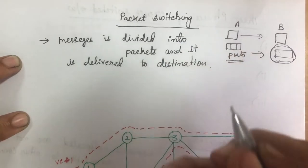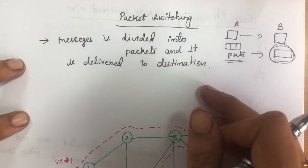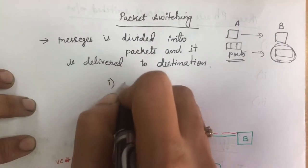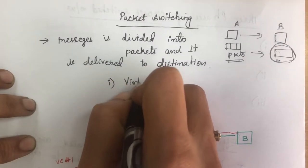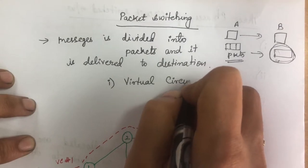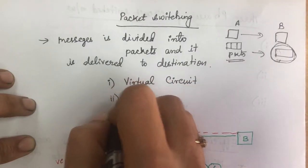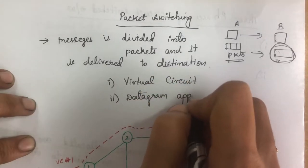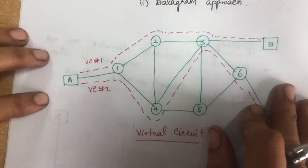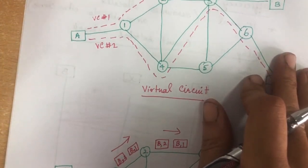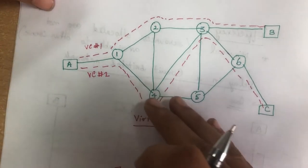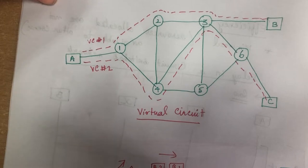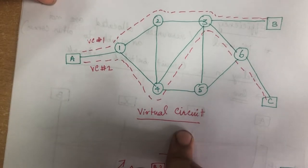There are two types of packet switching — two approaches for delivering packets to the destination. One is the virtual circuit approach and the second one is the datagram approach. First I will tell you the difference between virtual circuit and datagram approach, then we will see in detail about the datagram approach, and then we will go to the virtual circuit approach.